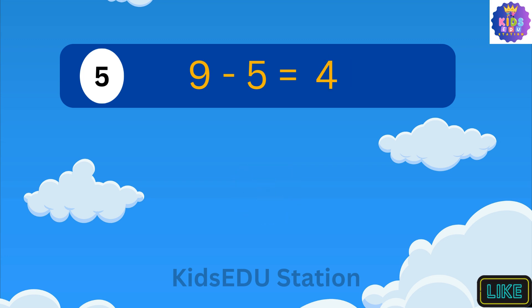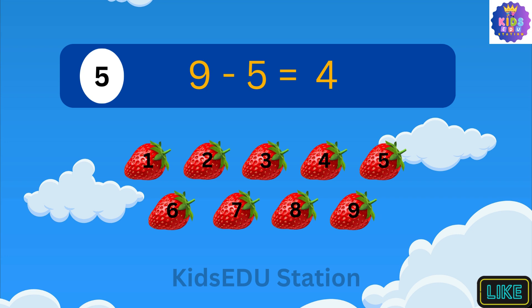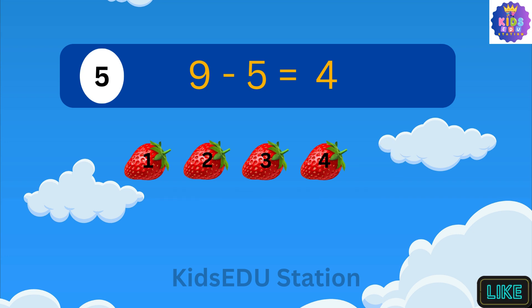9 minus 5 is 4. Imagine you have 9 strawberries. You ate 5 of them. Now you have 1, 2, 3, and 4 strawberries left.